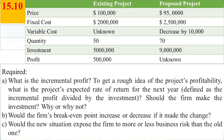Schweizer Satellite INS produces satellite earth stations that sell for $100,000 each. The firm's fixed costs are $2,000,000. 50 earth stations are produced and sold each year. Profits total $500,000 and the firm's assets are $5,000,000.